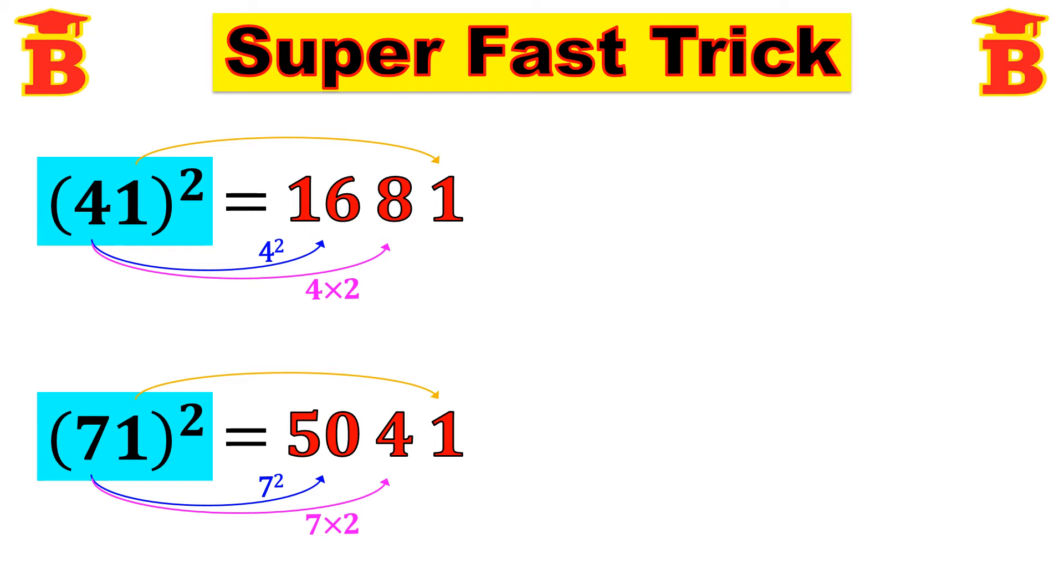Once you know the procedure, you can do it very fast in just a few seconds. The same technique we can apply even for 3 digits also. So next, let us find the square of 121. This 121 also ending with 1. So we are going to use the same technique.